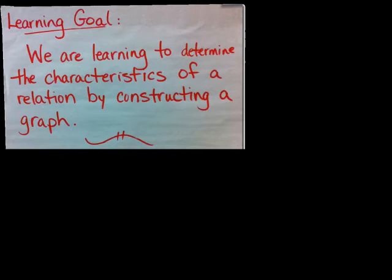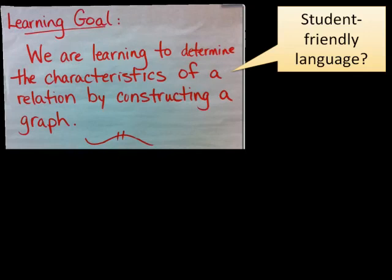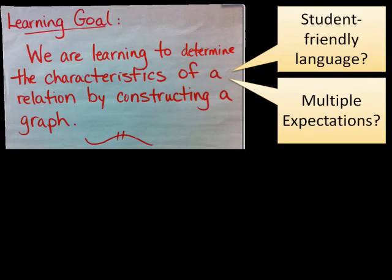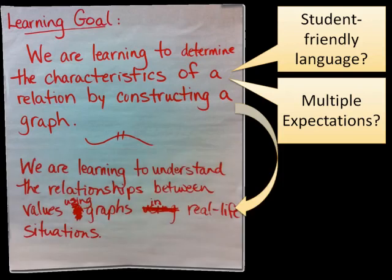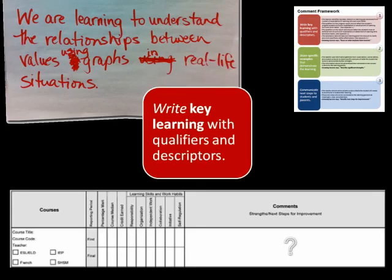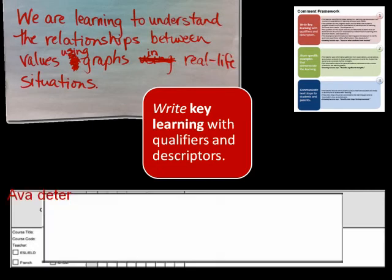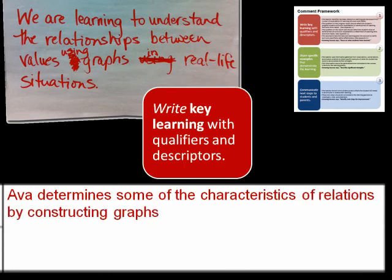After writing your learning goal, it is good practice to ask yourself the following questions: Is the learning goal written in student-friendly language? Is the learning goal based on multiple expectations? As a result of reflecting on these questions, the learning goal becomes: 'We are learning to understand the relationships between values using graphs in real-life situations.' We begin writing our report card comment by describing the student's achievement of the key learning. We use qualifiers and descriptors to develop this learning goal into a comment that is personalized for this student. So our comment begins with: 'Ava determines some of the characteristics of relations by constructing graphs.'